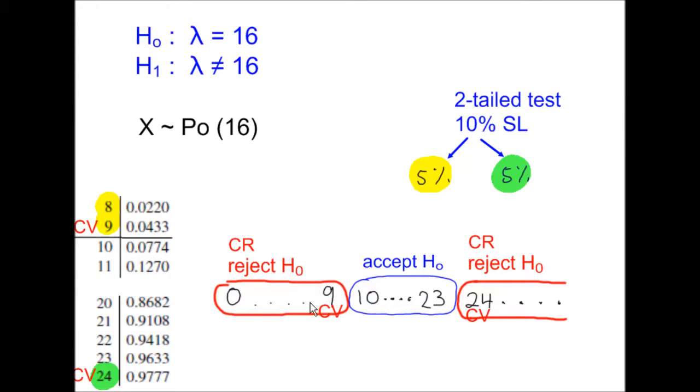So 0 to 9 is in the rejection region, 10 to 23 is in the acceptance region, and 24 or more is in the rejection region. The Poisson distribution has no upper limit, hence 24 onwards here. There's no final value on this side.